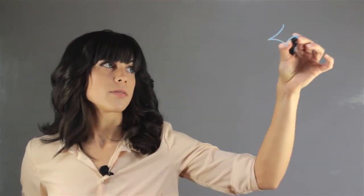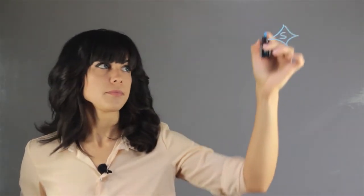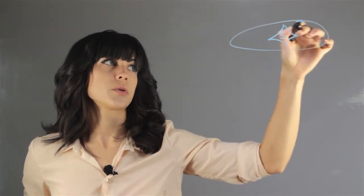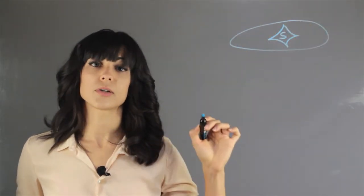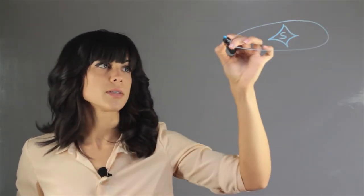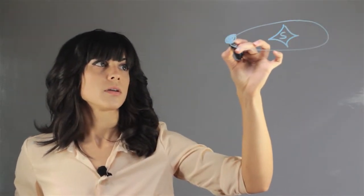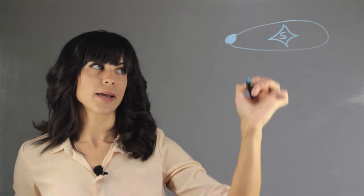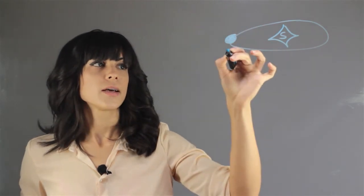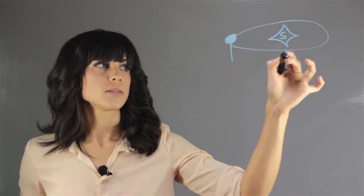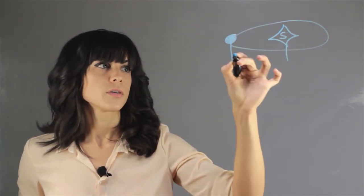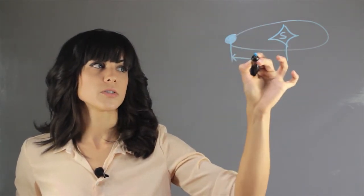Here we have the Sun, and here is Mercury's orbit, which is the closest one to the Sun. Here we have the planet, and this distance we're going to call r.